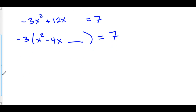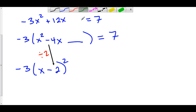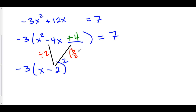Here we can complete the square. The way we do it is take the b term and divide it by 2. Negative 4 divided by 2 is negative 2, so we divide the b term by 2 and that becomes the number inside our square. Then we have to add something inside the polynomial to complete the square. That number is b over 2 squared — we square negative 2 and get positive 4. So this part right here is the b over 2 squared.